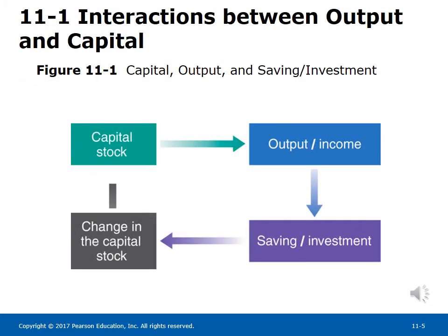Figure 11-1 shows the relation between capital, output, saving, and investment. The green arrow shows that the amount of capital determines the amount of output being produced. The blue and purple arrows show that the amount of output determines the amount of saving and, in turn, the amount of capital being accumulated.